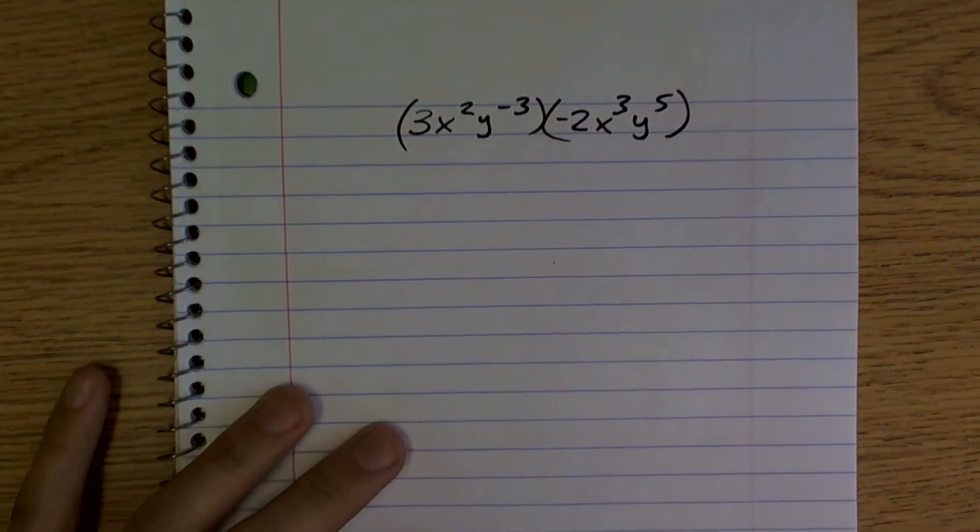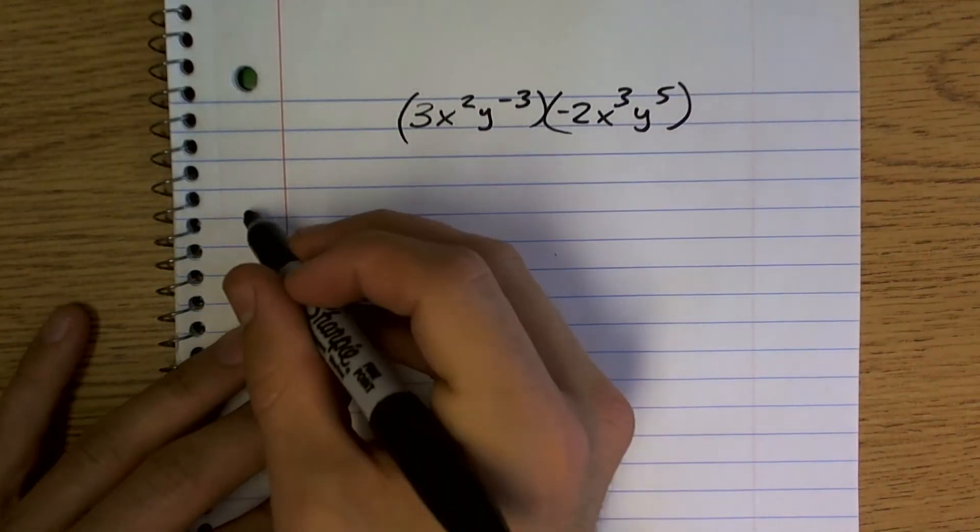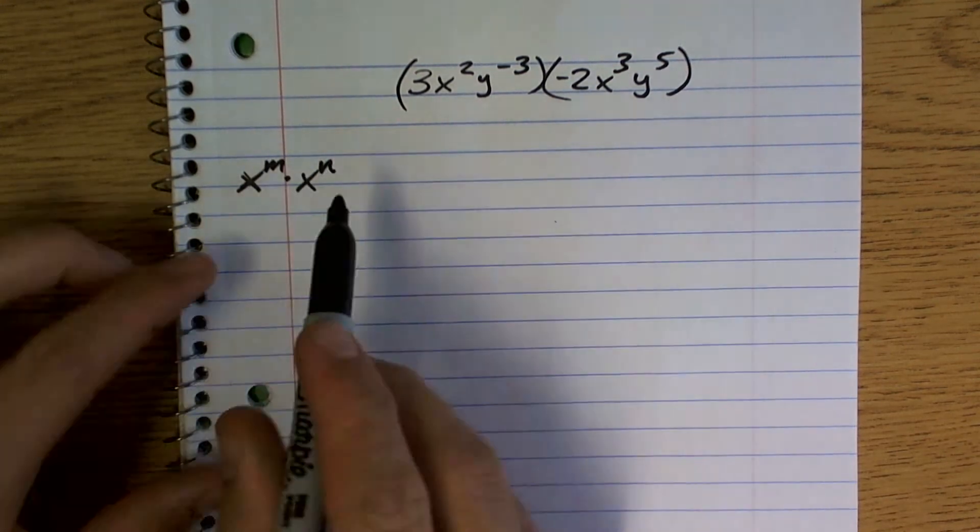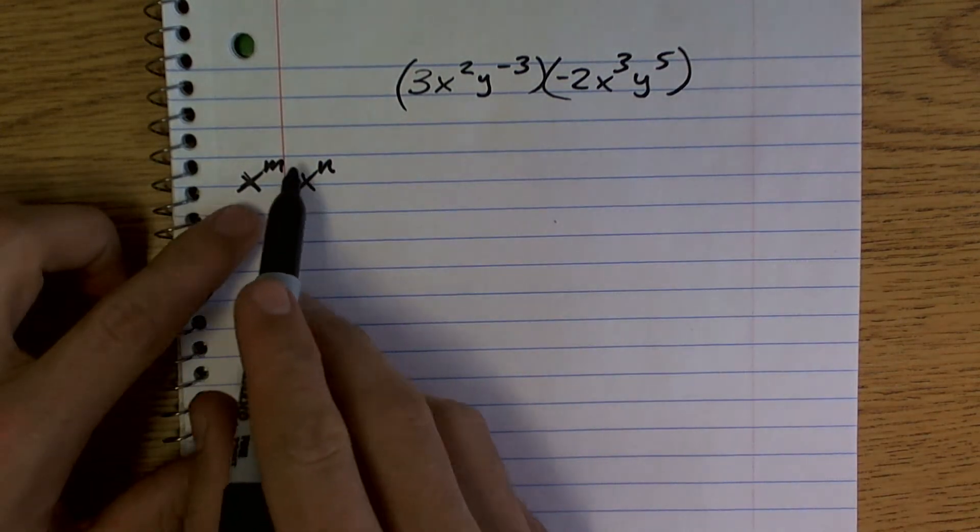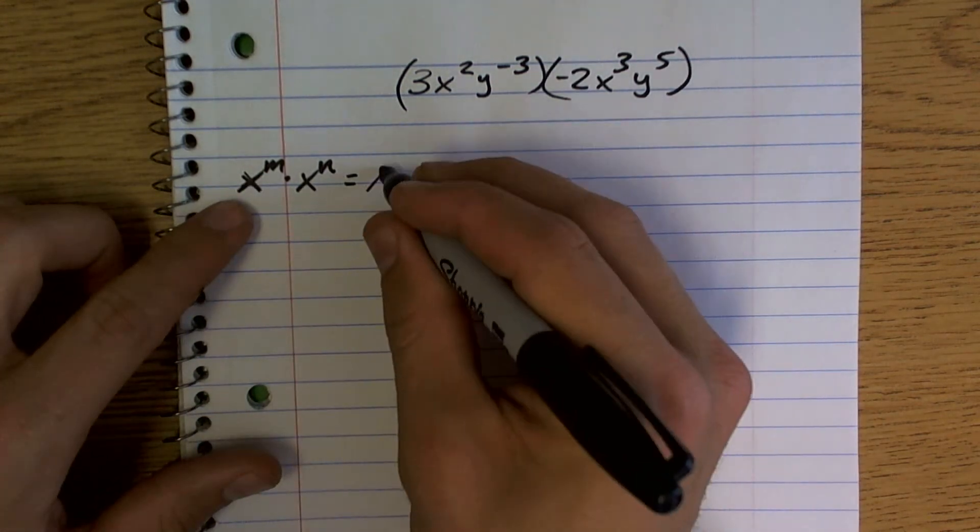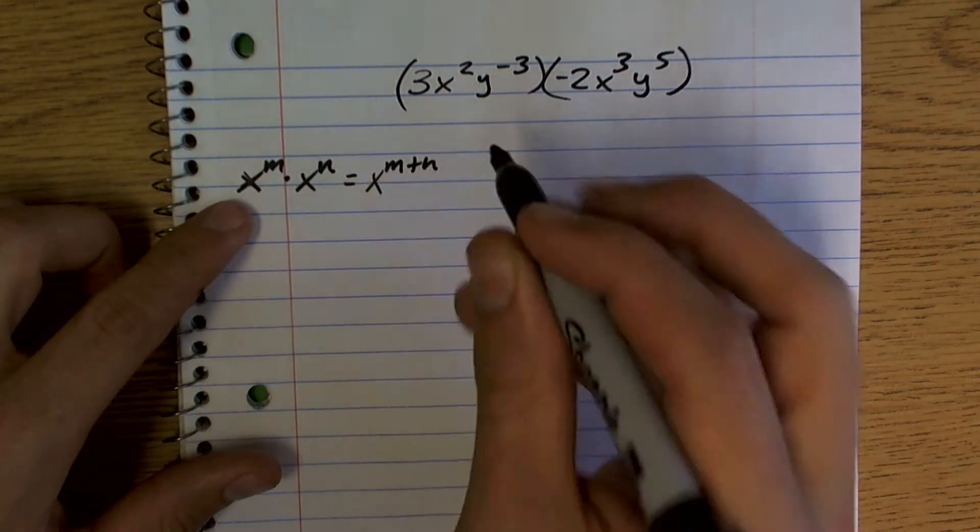So the things that we need to remember about the rules of exponents: when you have an exponent multiplied by another exponent, and you've got to make sure they have the same base, their exponents can be the same or different, but as long as they have the same base, what you're going to do is you're going to add the exponents.